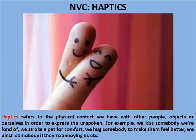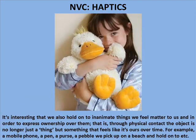NVC Haptics. Haptics refers to the physical contact we have with other people, objects or ourselves, in order to express the unspoken. For example, we kiss somebody we're fond of; we stroke a pet for comfort; we hug somebody to make them feel better; we pinch somebody if they're annoying us. It's interesting that we also hold on to inanimate things in our lives which we feel matter to us, in order to express ownership over them — that is, through physical contact the object is no longer just a thing, but something that feels like it's ours over time; for example, a mobile phone, a pen, a purse, a pebble we may pick up on a beach.